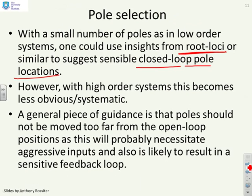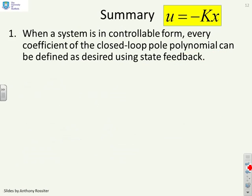So a general piece of guidance is that poles should not be moved too far from the open loop positions, because if you're trying to move them from their natural positions, then it's likely you're going to have to use aggressive inputs, because you're trying to make the system behave in a way that is not natural for the system, and then you're likely to get sensitivity. But again, this comment is rather loose and vague, and you're not going to be using the word systematic.